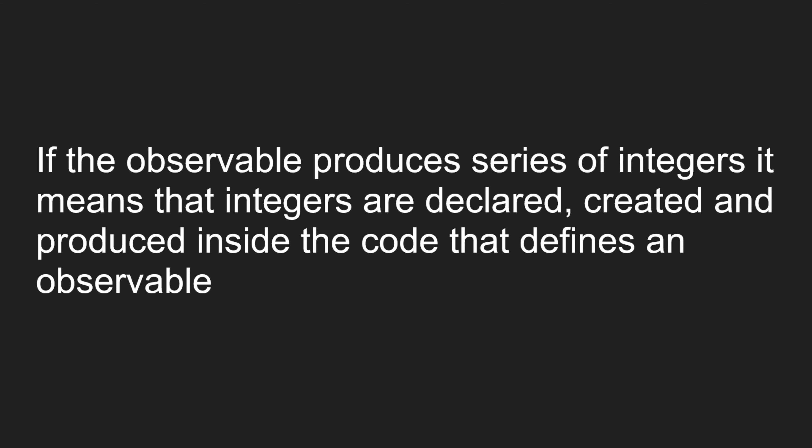For example, if you have an observable that is producing a series of integers — something like 1, 2, 3, 4, 5 — those integers are declared, created, and produced inside the code that defines the observable. Whatever numbers you are creating, everything is happening inside the code that defines the observable.